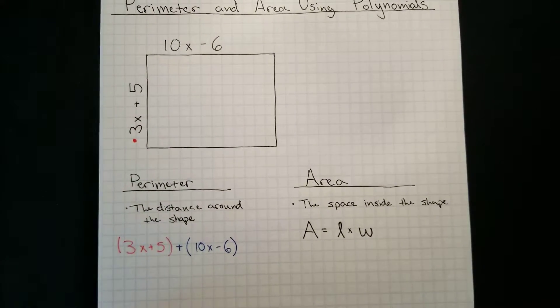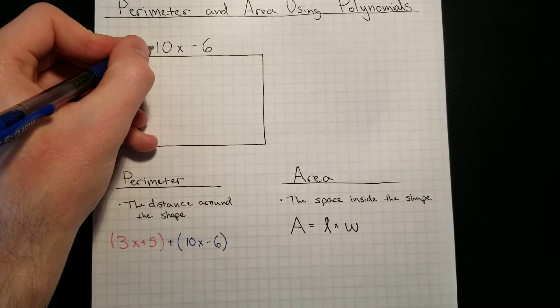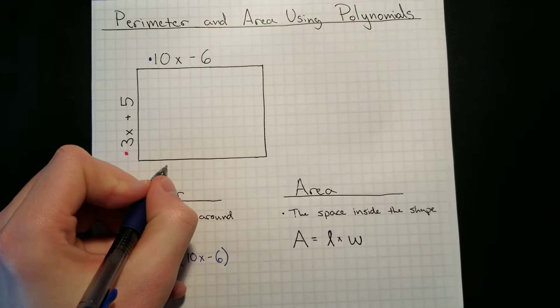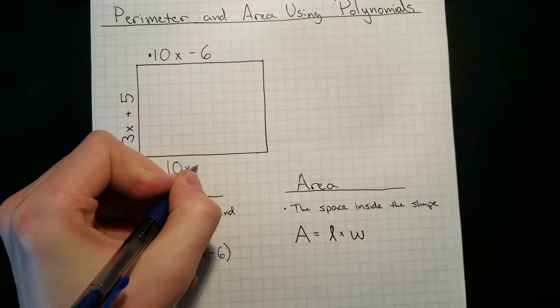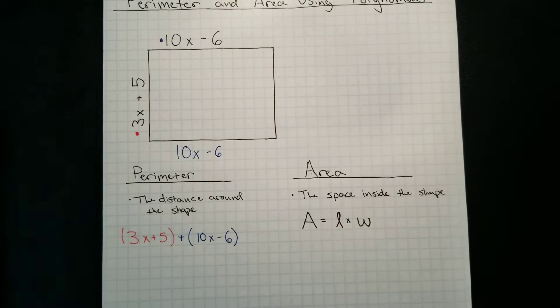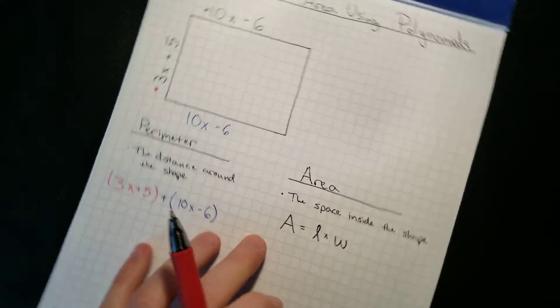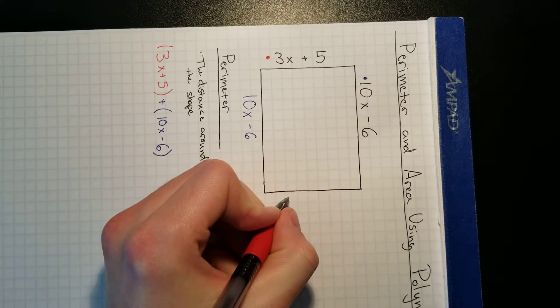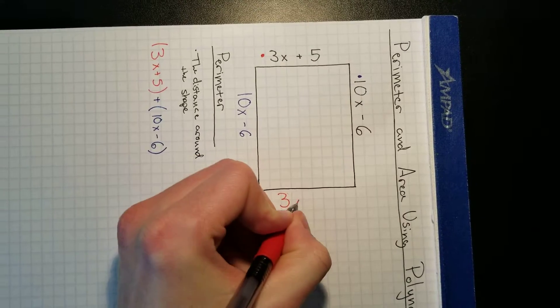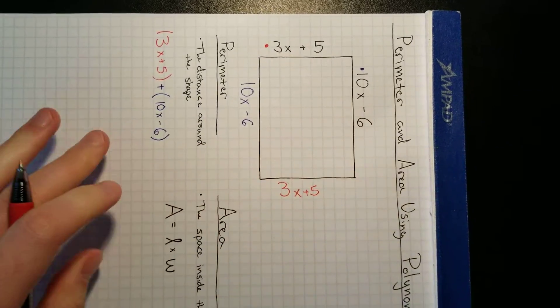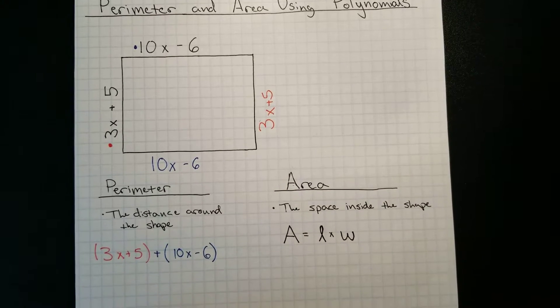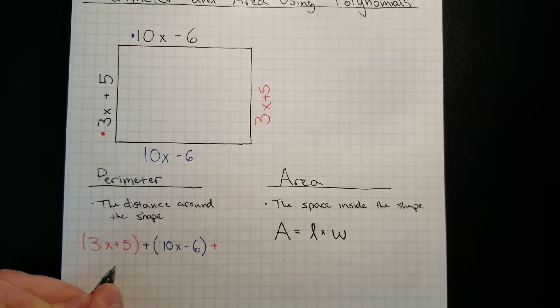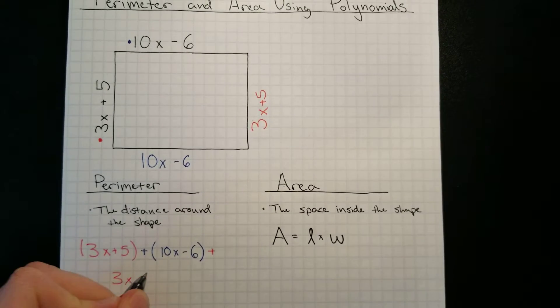And we have two remaining sides. This bottom side, since this one is equal to the top, this one is another 10x minus 6. And since this side is the same as this side on this, to the right, this one is another 3x plus 5. So when we do our problem for the total perimeter, we have to add another 3x plus 5.